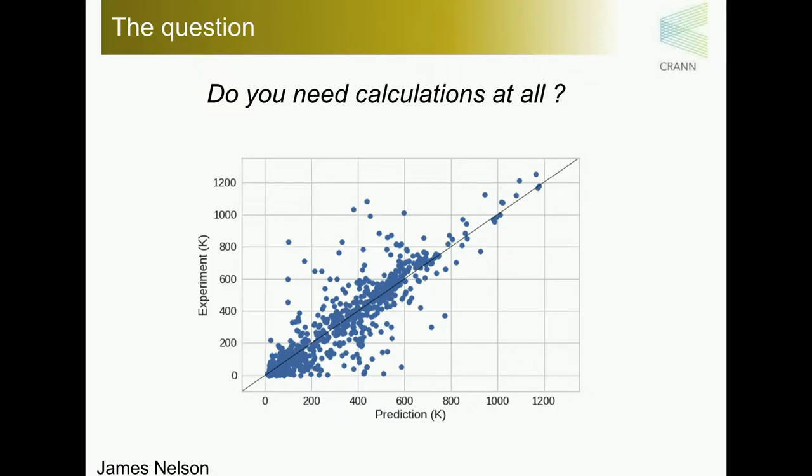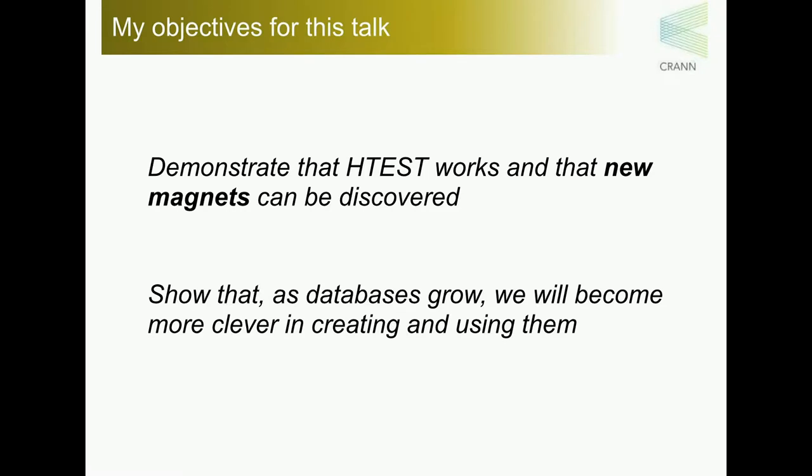Now, I'm going to come back to this point at the very end to try to show that, in reality, you need a combination of the traditional high-throughput and methods like machine learning to really achieve knowledge and precision. So the two objectives of this talk are essentially to show that you have a high-throughput strategy to design your magnet, and hopefully that if you're clever, the databases can be augmented with different methods, and then sometimes you can become awfully more clever to use them.